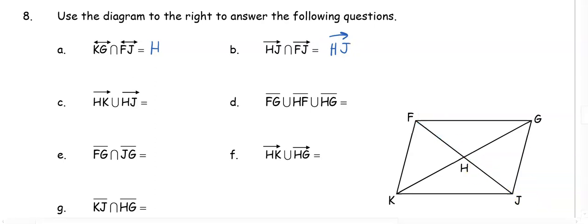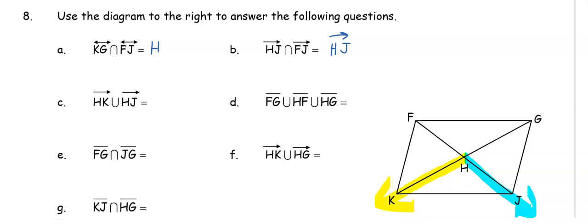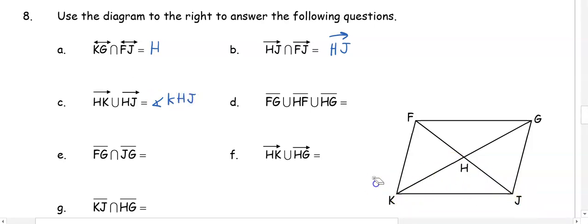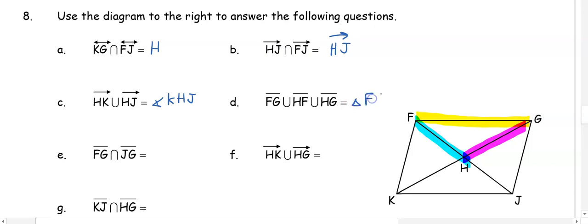In part C, ray HK union ray HJ — what are they forming? They form an angle, so we name it angle KHJ using three letters. In part D, we have a union of segment FG, segment HF, and segment HG. Together those three segments form a triangle, so we name it triangle FGH. Remember, you can arrange the letters however you want when naming it.